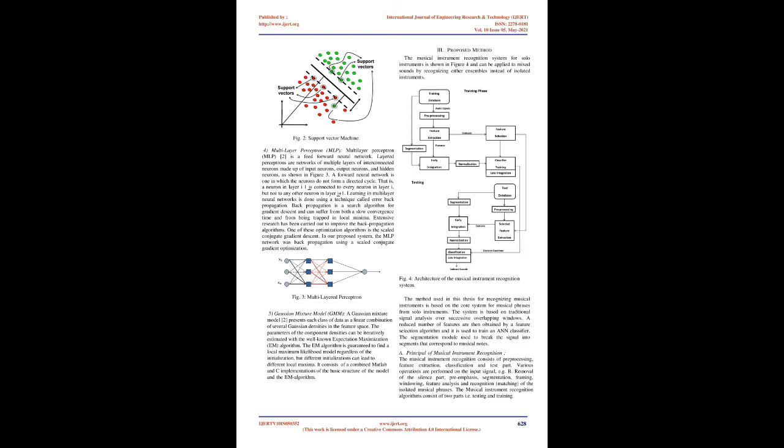Proposed Method. The musical instrument recognition system for solo instruments is shown in Figure 4 and can be applied to mixed sounds by recognizing ensembles instead of isolated instruments. The method used for recognizing musical instruments is based on the core system for musical phrases from solo instruments. The system is based on traditional signal analysis over successive overlapping windows. A reduced number of features are obtained by a feature selection algorithm and used to train a neural network classifier.